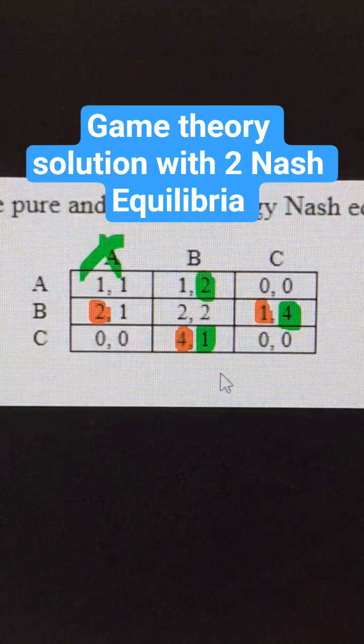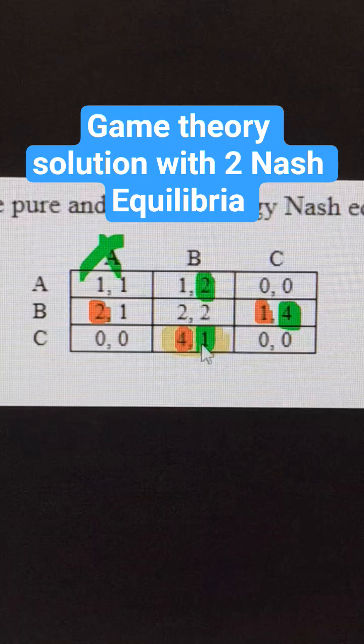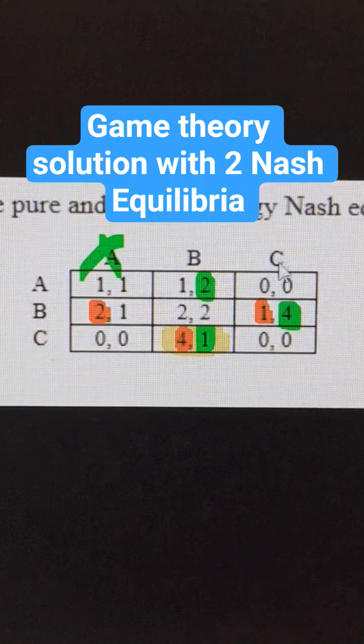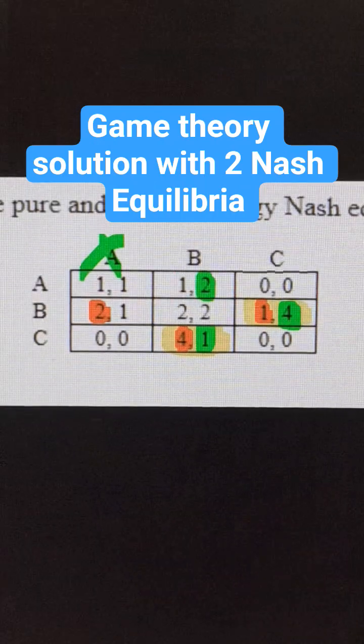Also for player 1, we have 2 Nash Equilibria. We have player 1 going C, player 2 going B. And then we have player 1 going B and player 2 going C. These are the 2 Nash Equilibria of this game.